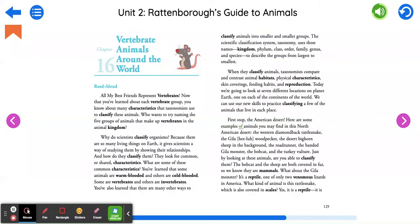Here are some examples of animals you may find in this North American desert: the western diamondback rattlesnake, the gila woodpecker, the desert bighorn sheep in the background, the roadrunner, the banded gila monster, the bobcat, and the turkey vulture. Just by looking at these animals, are you able to classify them?